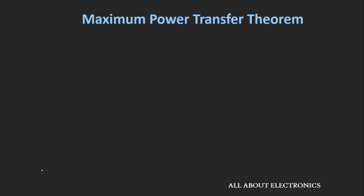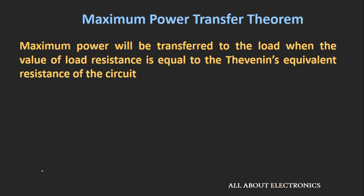In this video, we will see the maximum power transfer theorem for DC circuits. This theorem says that the maximum power will get transferred to the load when the value of the load resistance is equal to the Thevenin's equivalent resistance of the given circuit. This Thevenin's equivalent resistance is the equivalent resistance of the circuit seen through the load terminals while turning off all the independent sources. If you don't know about Thevenin's theorem, you can check my video on it.